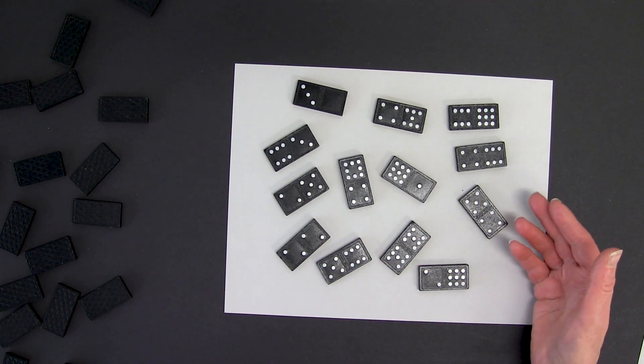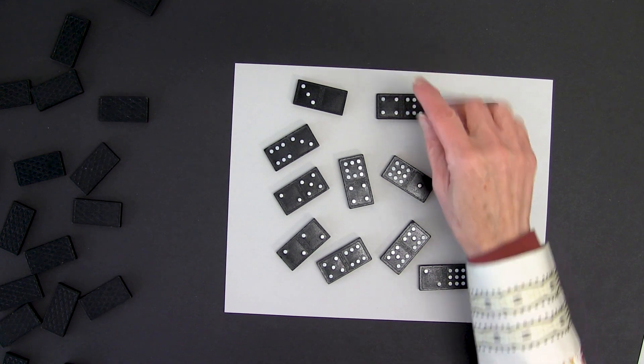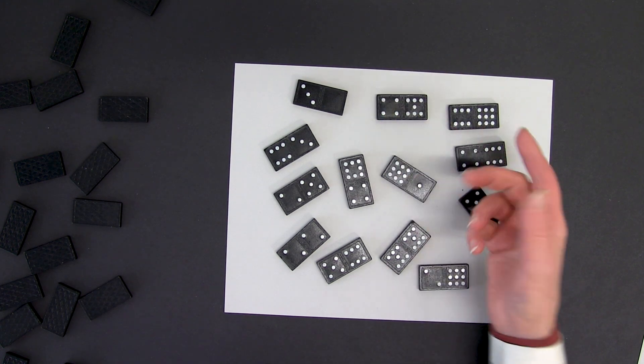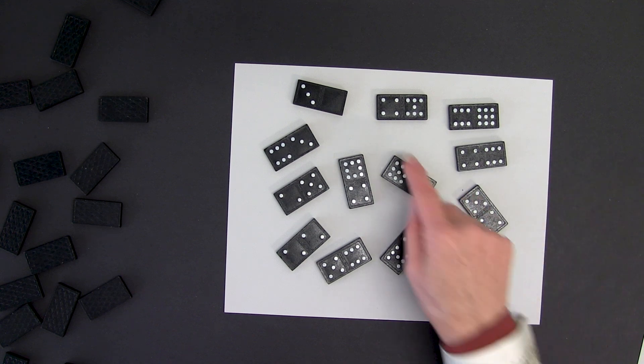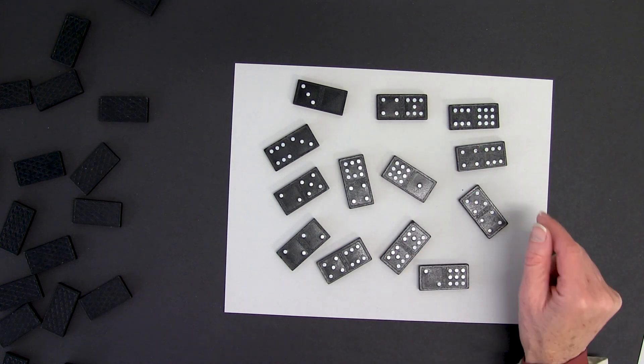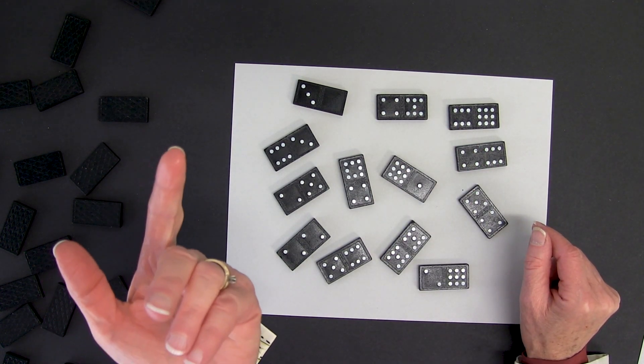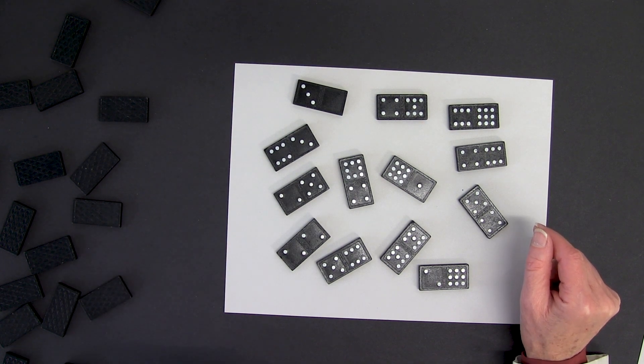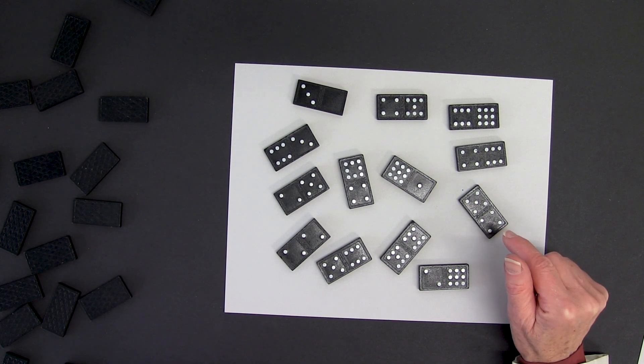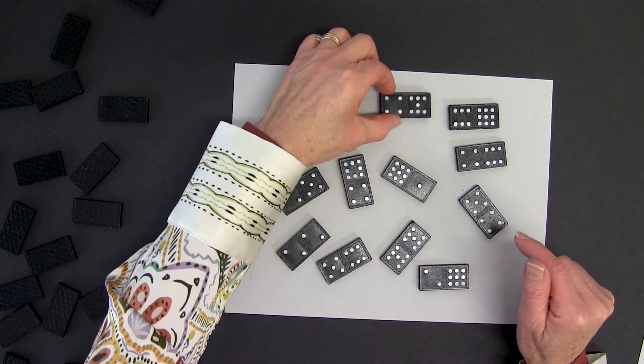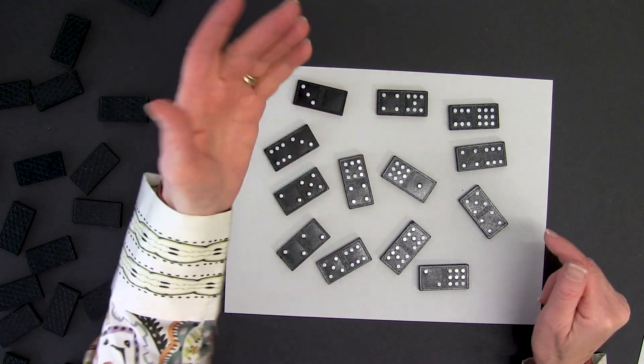I could start by looking at the dominoes and taking the two sides to create a two-digit number. Here I have 47. First of all, I have to decide, is this a prime number or a composite number? I know that 47 is a prime number.